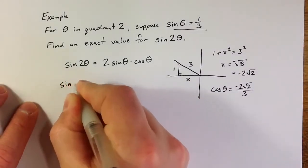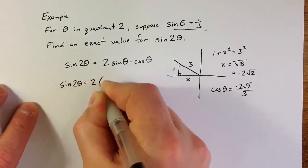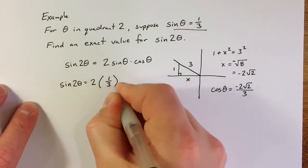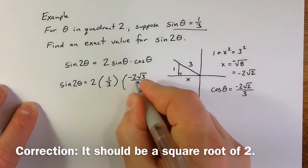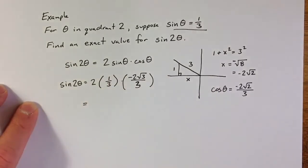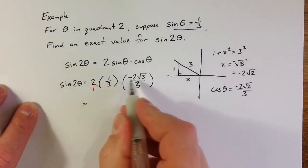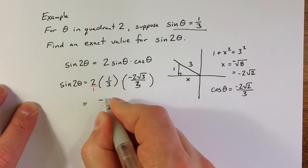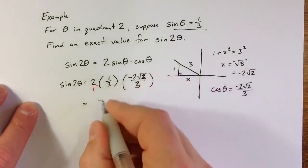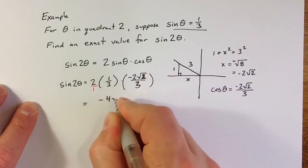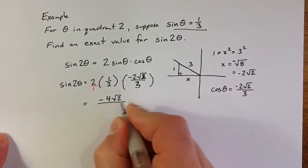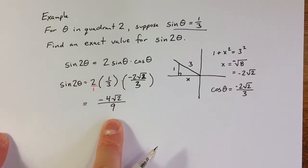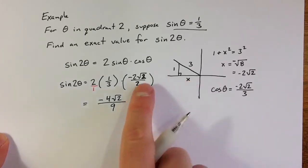So sine of 2 theta equals 2 times 1 third times negative 2 times the square root of 2 over 3. Simplifying, 2 goes in the numerator, and multiplying 2 times 1 times negative 2 square roots of 2 gives negative 4 square roots of 2, divided by 9. So negative 4 square roots of 2 over 9 is the exact value for sine of 2 theta.